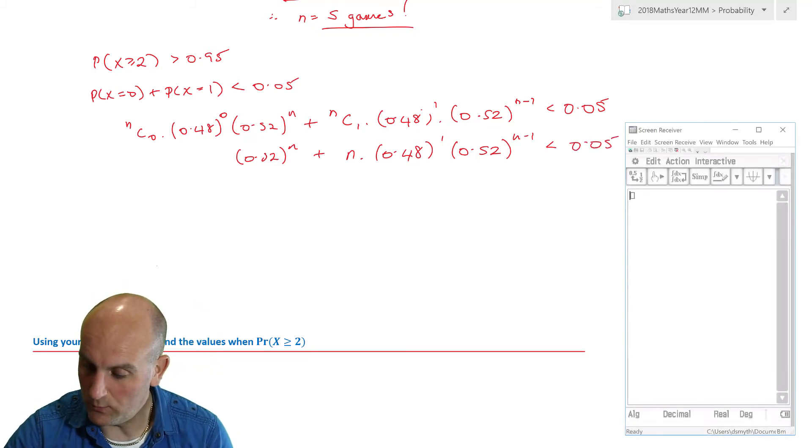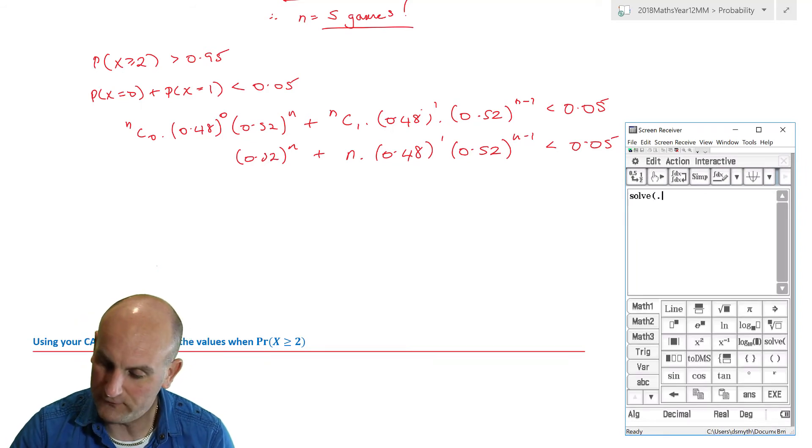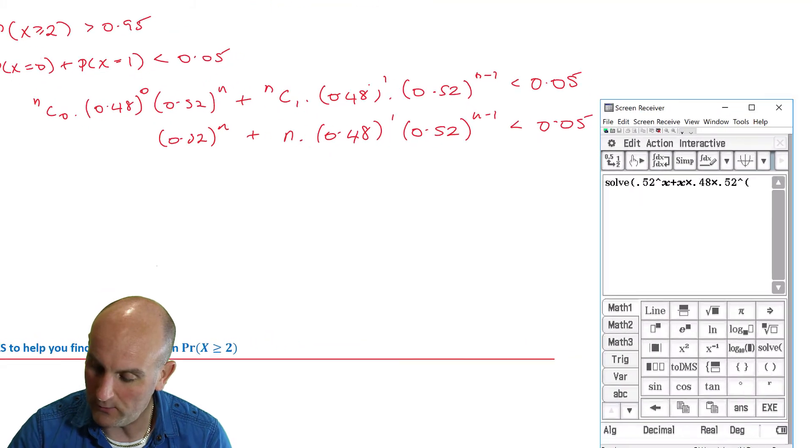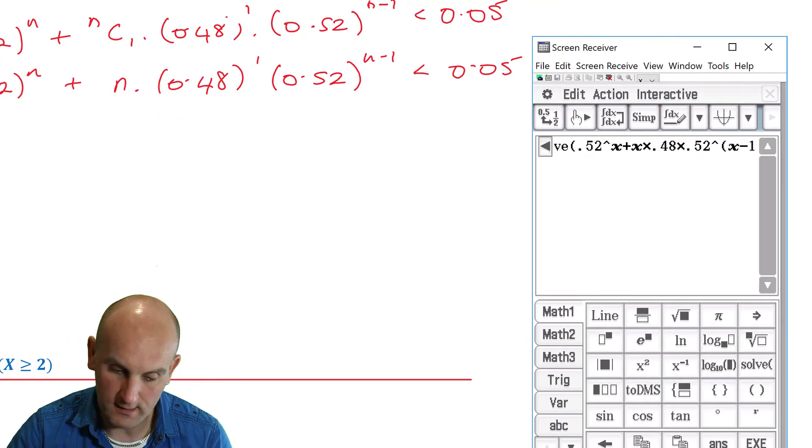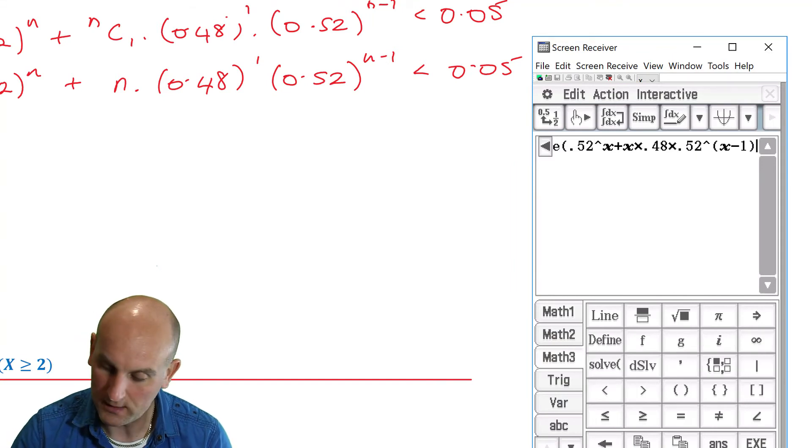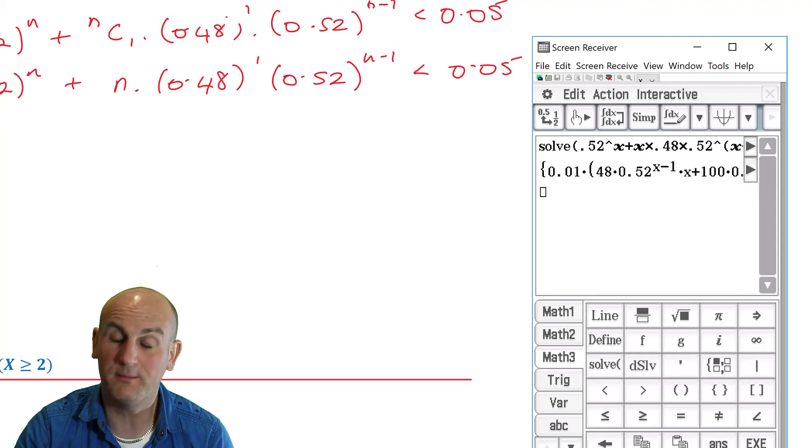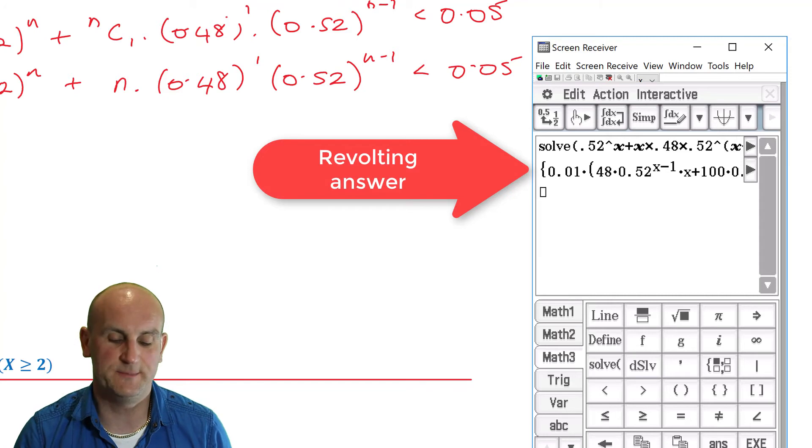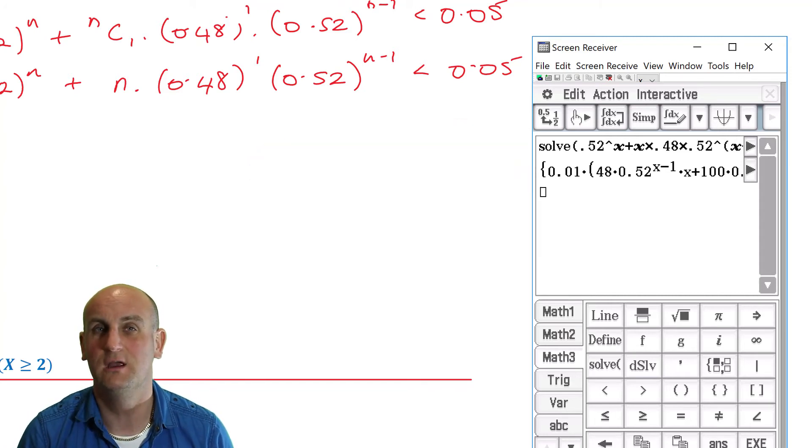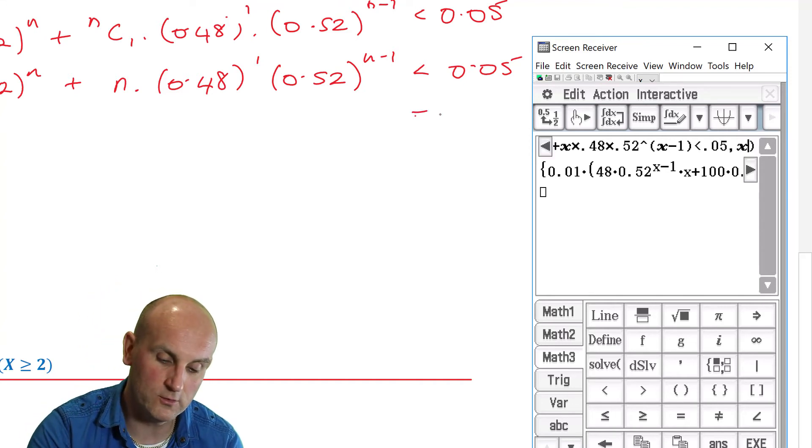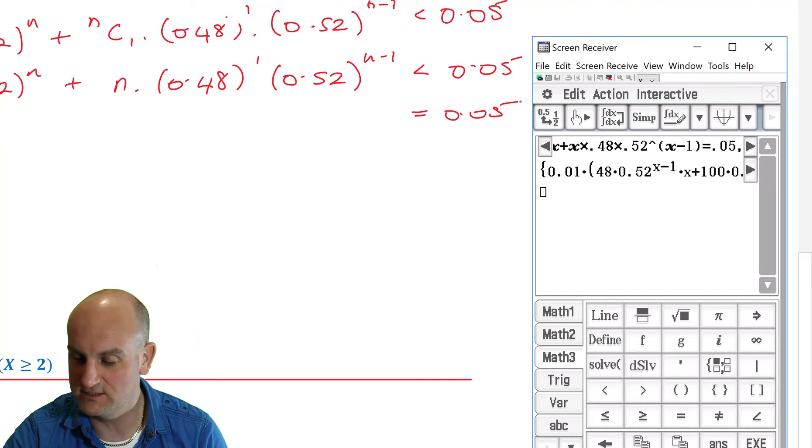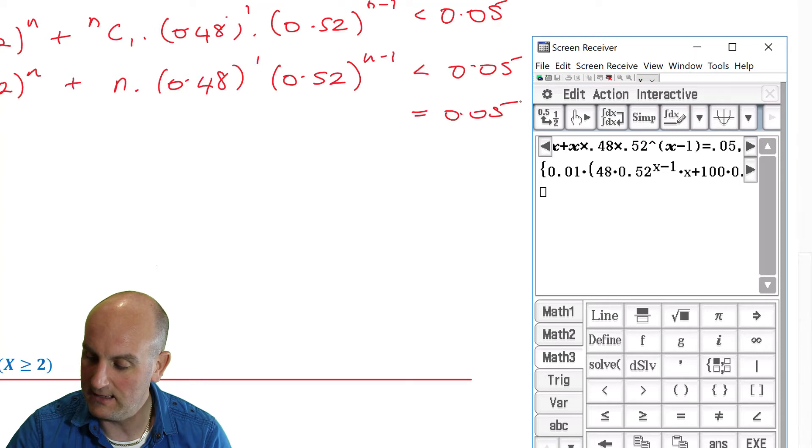Okay, so putting that into my calculator, we're going to go solve for 0.52 to the power of X plus X times 0.48 times 0.52 to the power of (X minus 1) is going to be less than 0.05, do a comma and do X. And lo and behold up comes a revolting answer. Now that's not what I was expecting, and it would appear that CAS calculators struggle with trying to do inequalities in that sense. So what I can do is actually solve it for equals to 0.05.